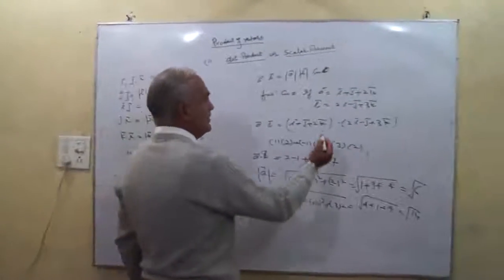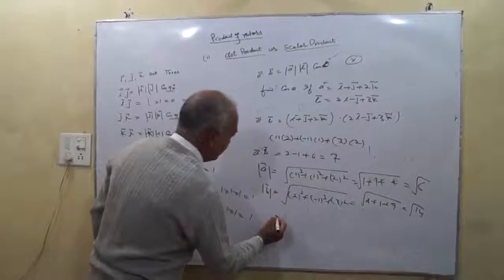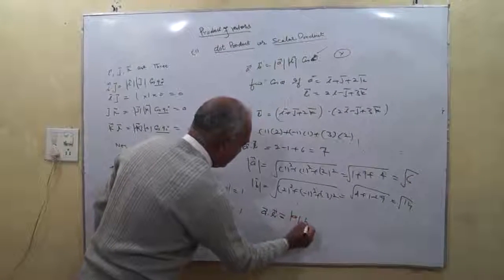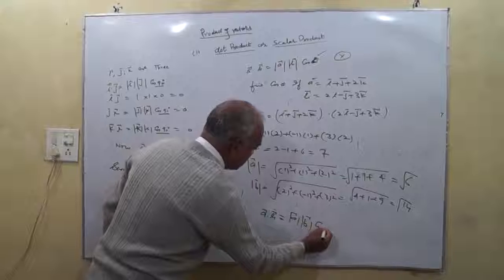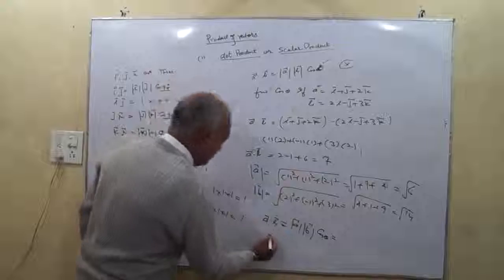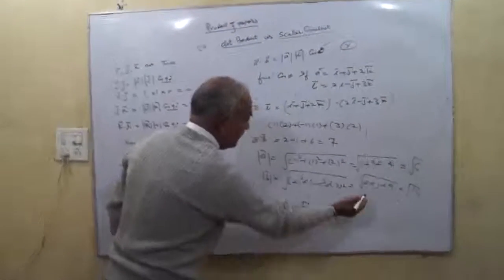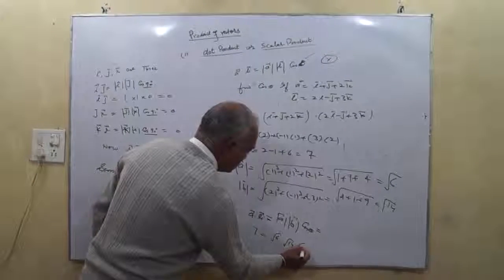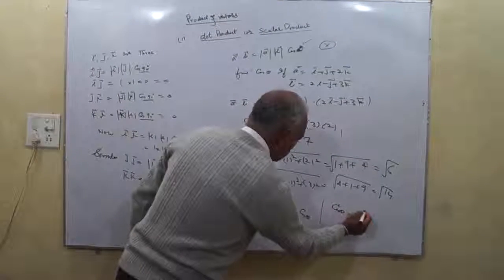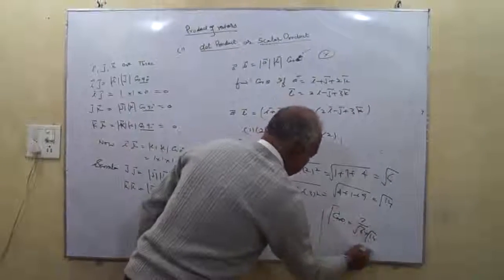Now put these values into the formula: A dot B equals |A| times |B| times cos theta. We have A dot B equals 7, |A| equals square root of 6, and |B| equals square root of 14. Therefore, cos theta equals 7 divided by the square root of 6 times the square root of 14. This is the value of cos theta.